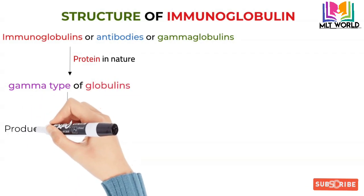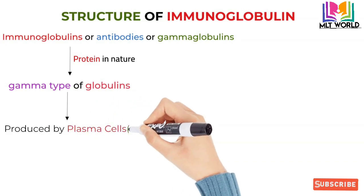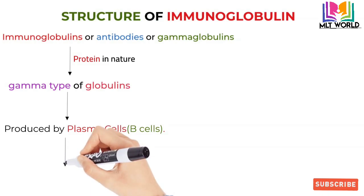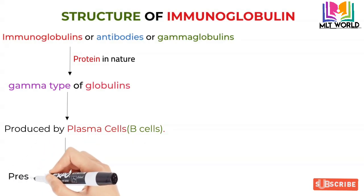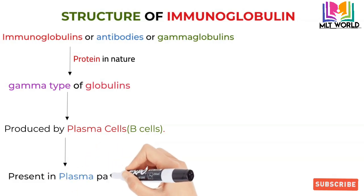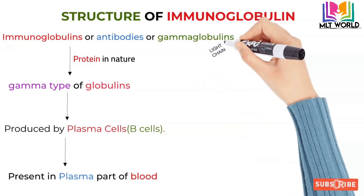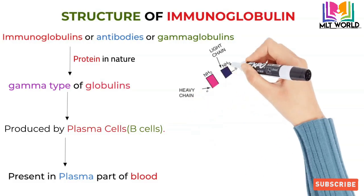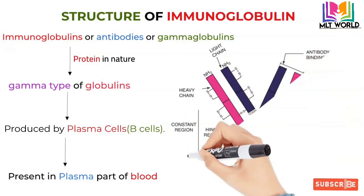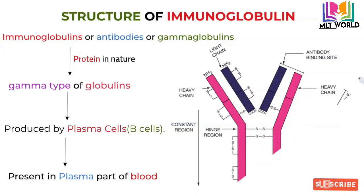Immunoglobulins, or antibodies, or gamma globulins, are produced by plasma cells — B cells — which are a type of white blood cell called lymphocytes. So from lymphocyte B cells, immunoglobulins are produced, and they are present in the plasma part of the blood.